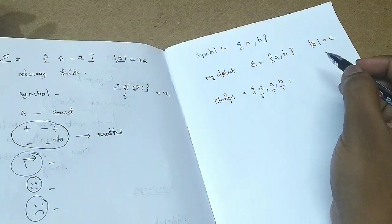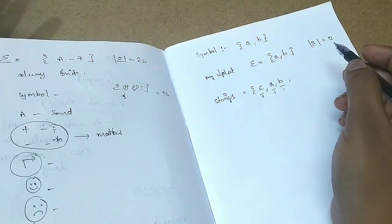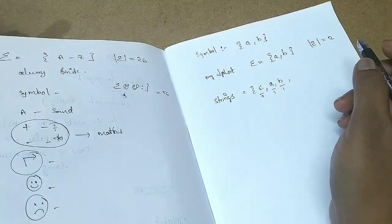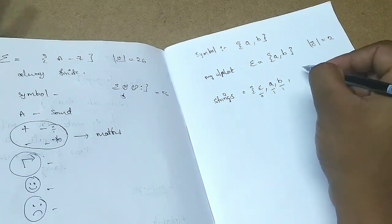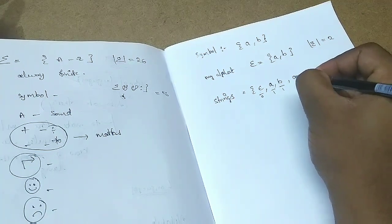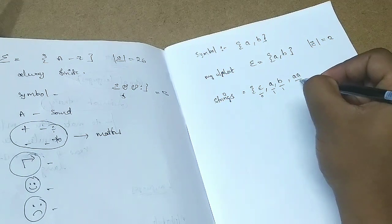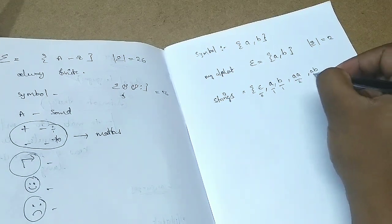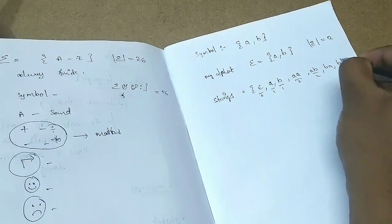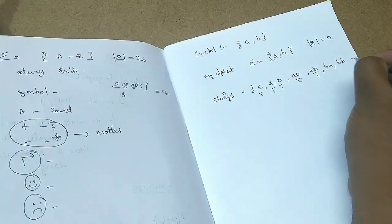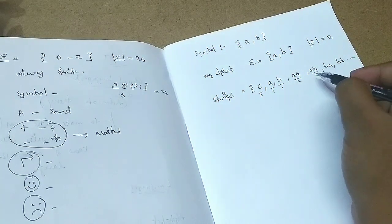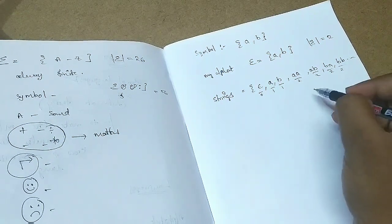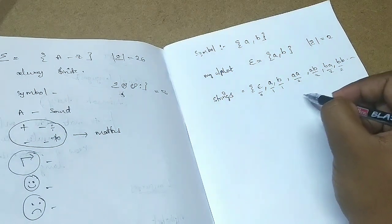Then I will come across strings of length 2. The strings of length 2 may be: aa, ab, ba, bb. Then there may be strings of length 3, length 4, length 5 — they can be infinite.